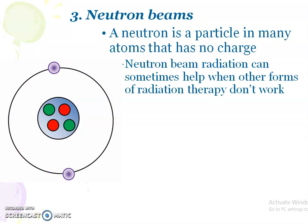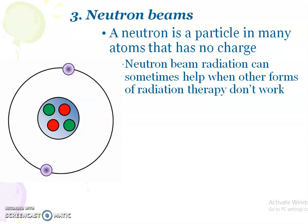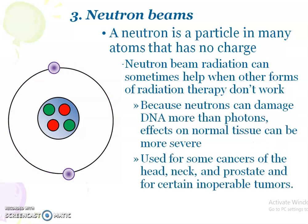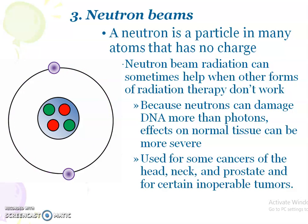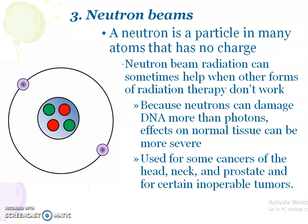Next are neutron beams. Neutrons are also particles found in many atoms, but their peculiarity is that they have no charge. Neutron beam radiation can help in some types of cancer where other types of radiation therapy are not working. However, neutron beams can damage DNA more than photons and also have more severe effects on normal tissues. Neutron beams are used for some cancers in the head, neck, and prostate, and for certain inoperable tumors.